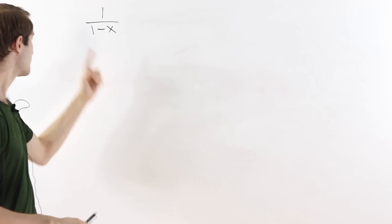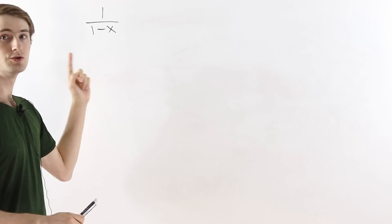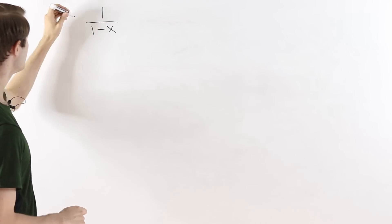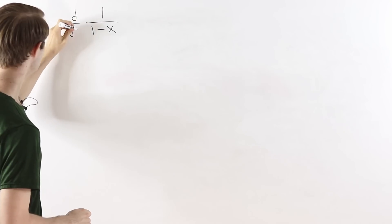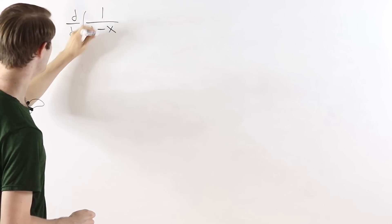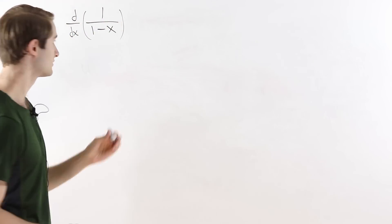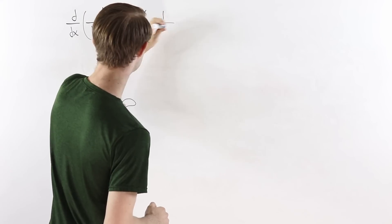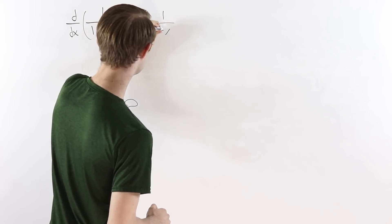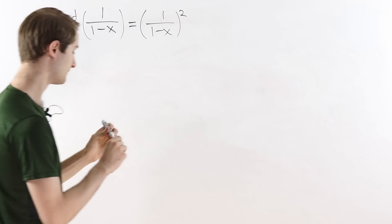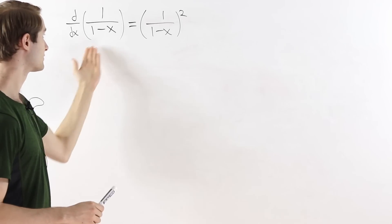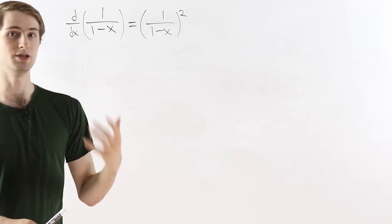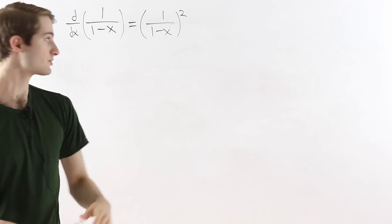We are going to talk about 1 over 1 minus x. One of the interesting things about this function is that if you take the derivative of 1 over 1 minus x, the result is 1 over 1 minus x squared. In other words, this is a solution to the equation y prime equals y squared.